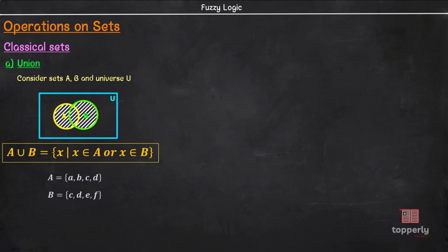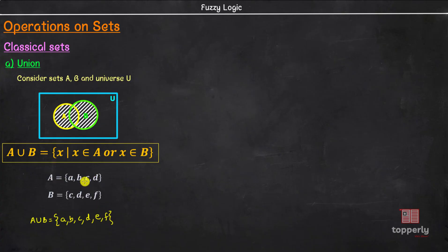Let us see an example. Consider a set A having elements A, B, C, and D. Consider another set B which has elements C, D, E, and F. Then A union B is given by the set of A, B, C, D, E, and F — that is, all the elements of set A and all the elements of set B. Now, the union operation is also called logical OR.